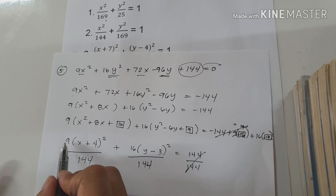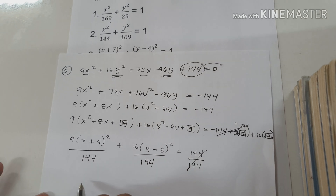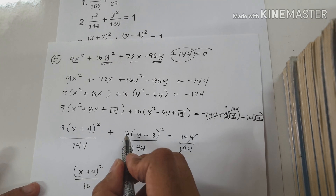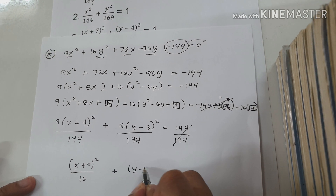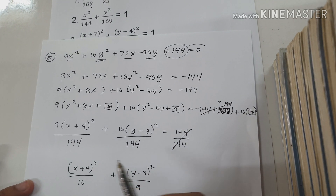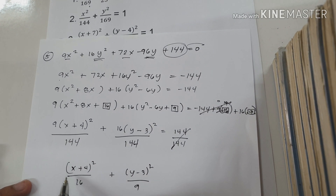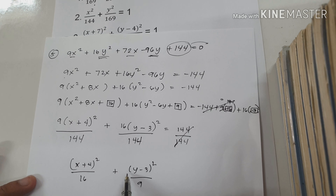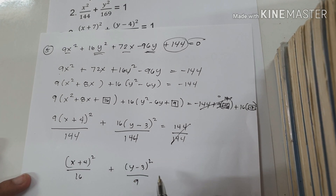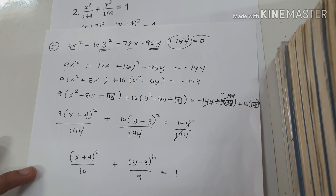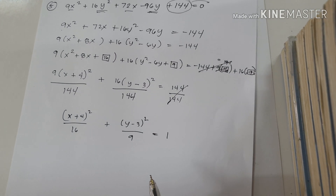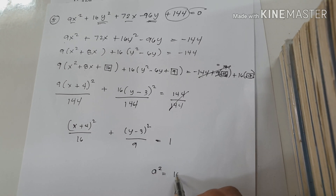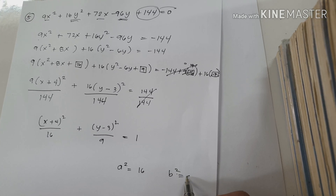To simplify our equation, we divide the whole equation by 144. So 9 over 144 is 1 over 16, giving (x plus 4) squared over 16. And 16 over 144 is 1 over 9, giving (y minus 3) squared over 9, equals 1. So the standard form is (x plus 4) squared over 16 plus (y minus 3) squared over 9 equals 1.